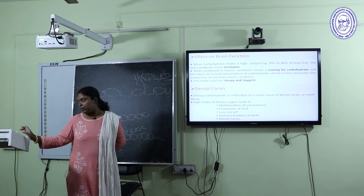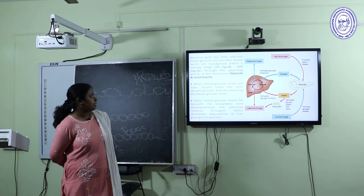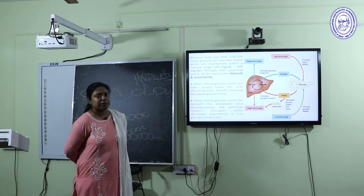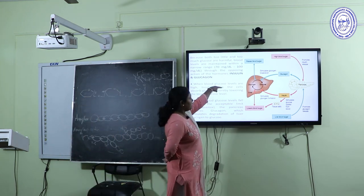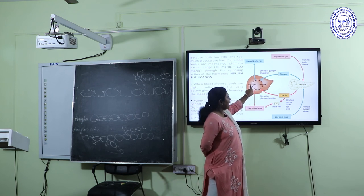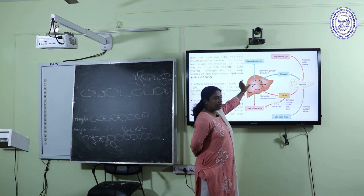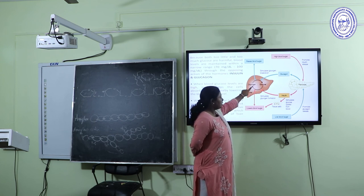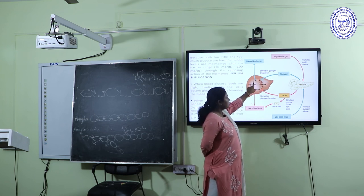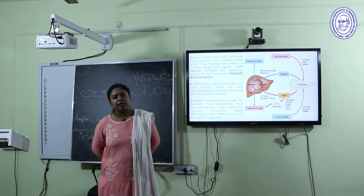We must neither overconsume nor underconsume carbohydrates, as both are dangerous. We must maintain normal blood glucose levels within 70 to 100 mg/dL. The hormones glucagon and insulin support this regulation. Whenever blood glucose rises, the pancreas secretes insulin, which converts glucose to glycogen and controls sugar levels within a narrow range. Whenever blood glucose falls, the pancreas secretes glucagon, which stimulates conversion of glycogen back to glucose via glycogenolysis, releasing glucose into the bloodstream. That is how blood sugar level is maintained in our body. Thank you.